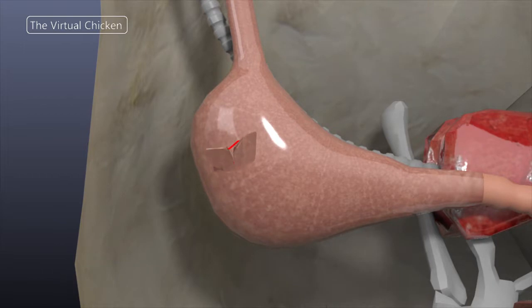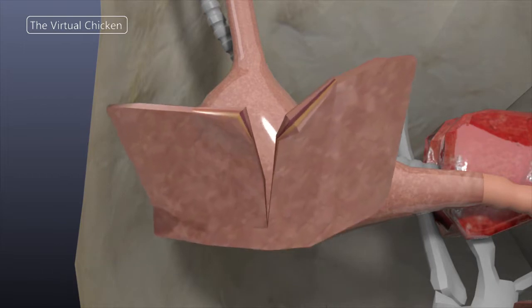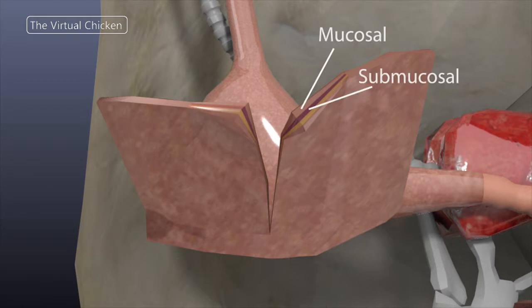The walls and lining of the crop are made up of the same four layers as the esophagus: the mucosal, submucosal, muscle tunic, and the serosal layer.